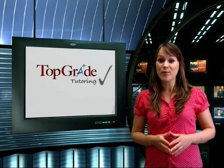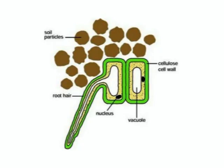Osmosis is very important in root hair cells. The cell membrane is selectively permeable, meaning it controls the amount of water that it lets in. The water in the surrounding soil is a less concentrated solution, while the cell sap is a more concentrated solution. This is why osmosis takes place as the water moves from a lower concentration to a higher concentration.